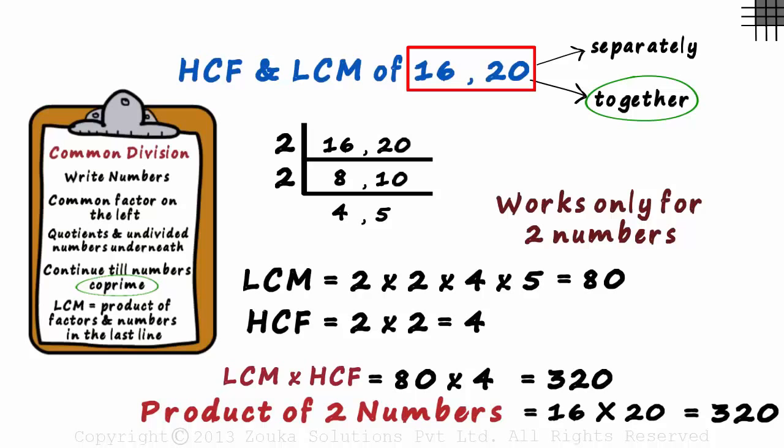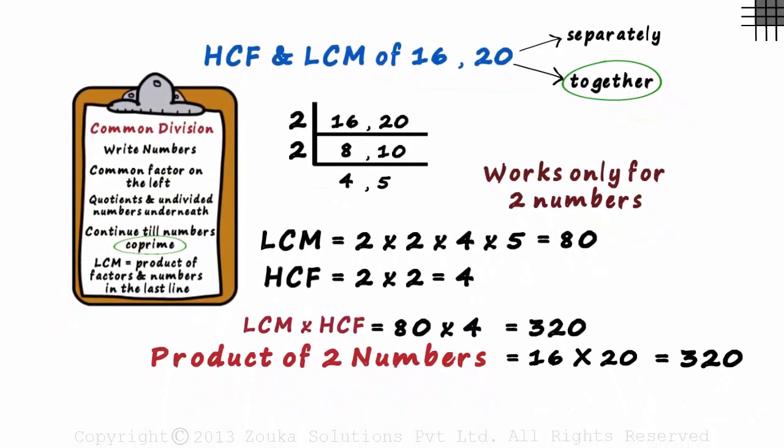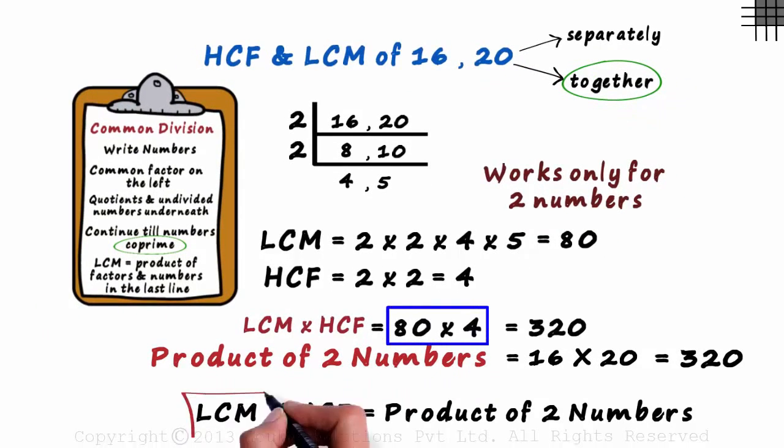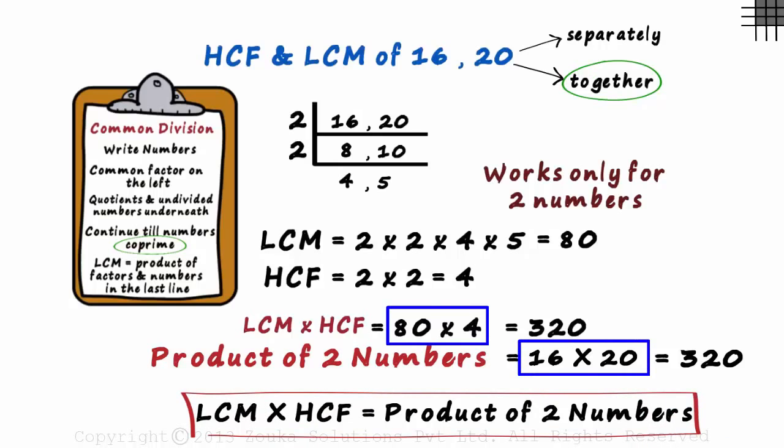This will always be true. For any two given numbers, the product of the LCM and HCF will be equal to the product of the two given numbers.